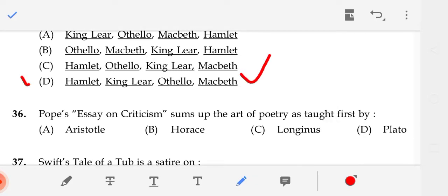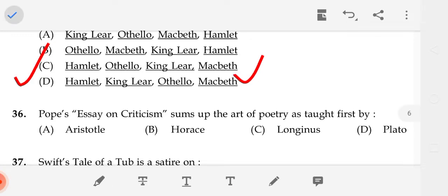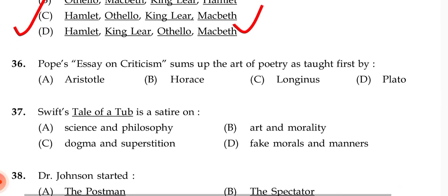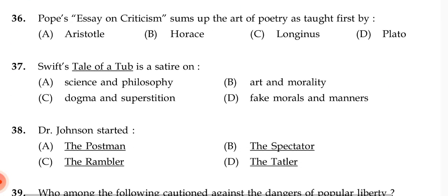Choose the correct chronological sequence of the following plays. The correct answer is C — Hamlet, Othello, King Lear, Macbeth.